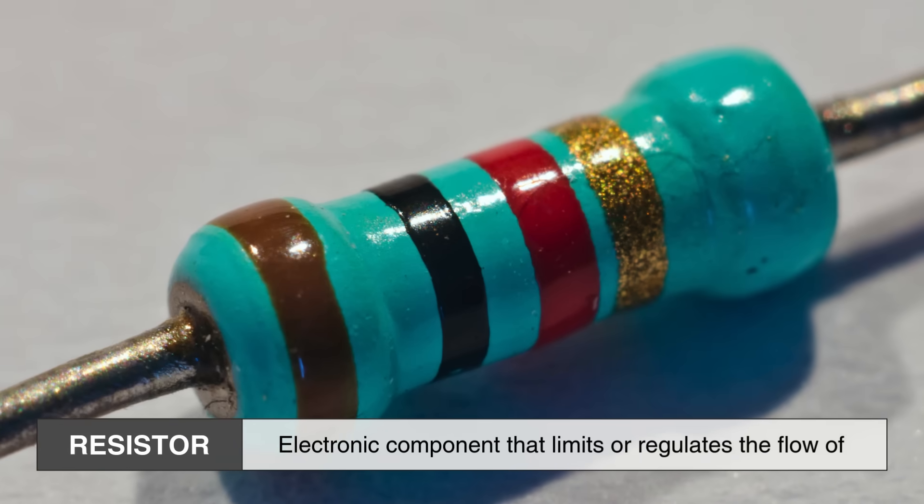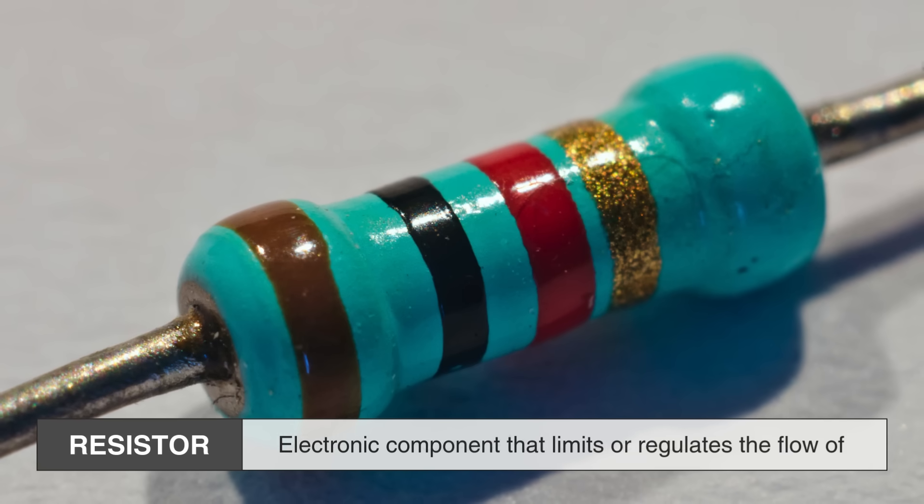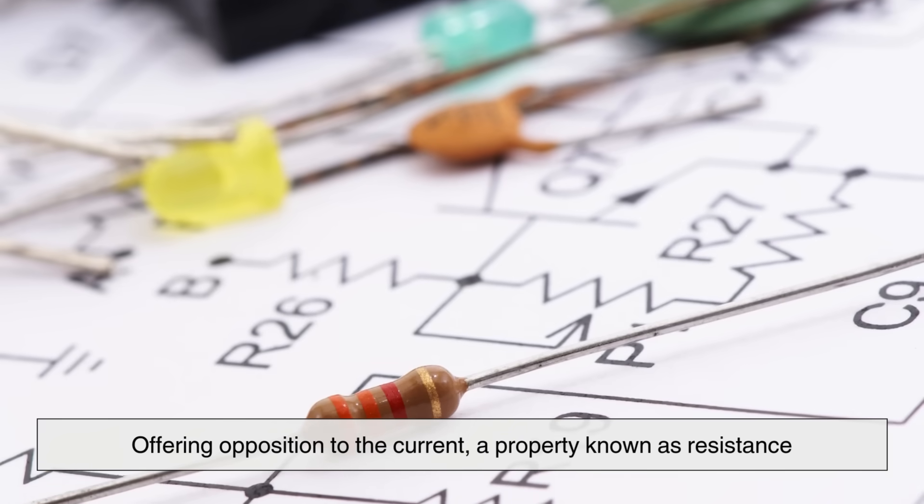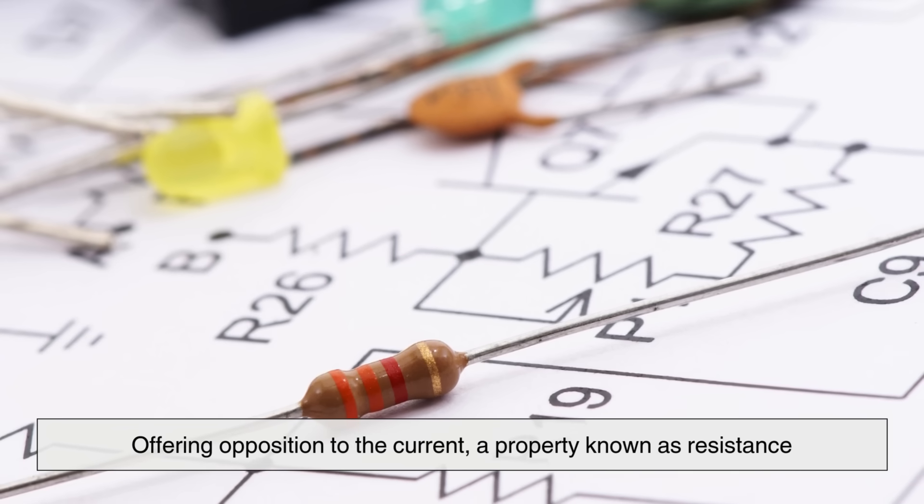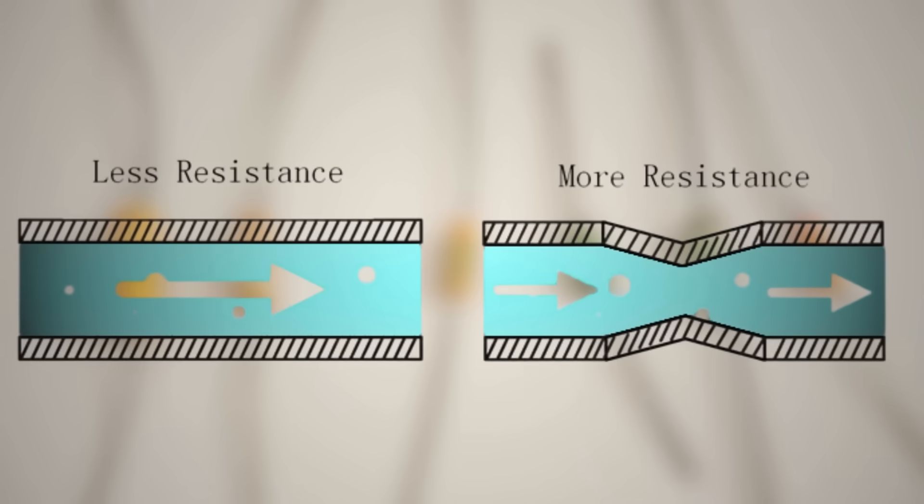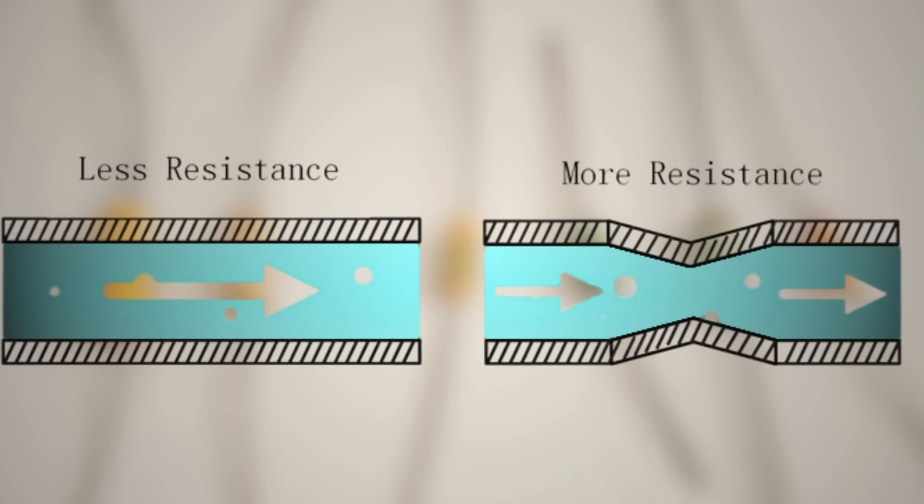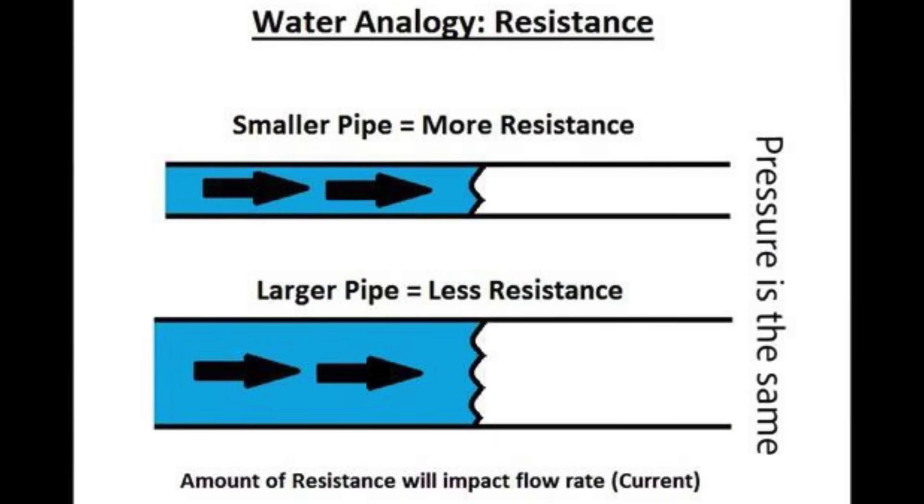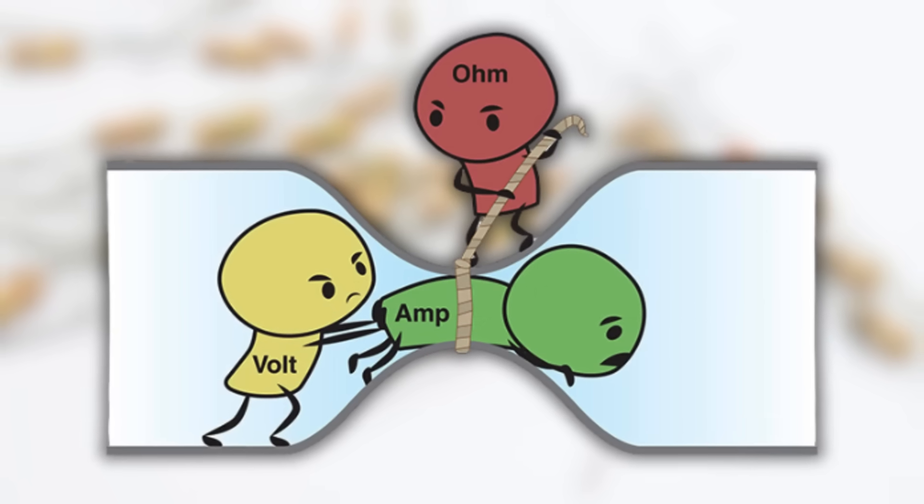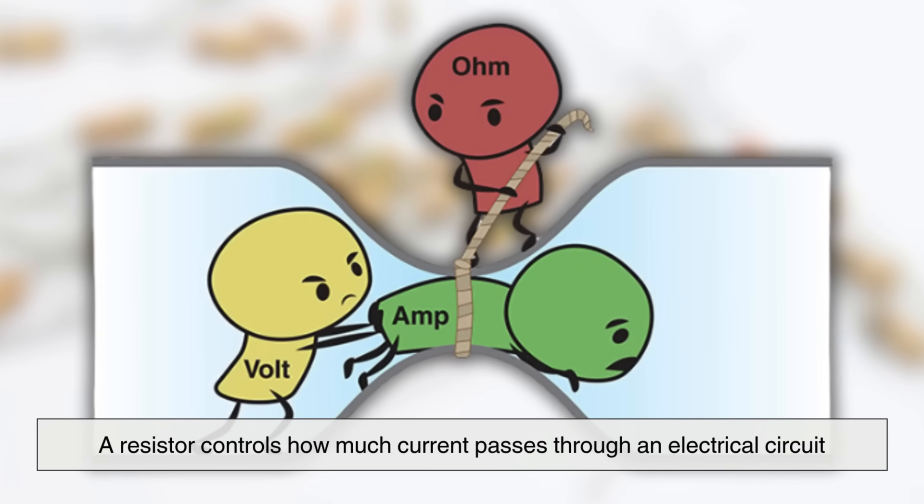A resistor is an electronic component that limits or regulates the flow of electrical current in a circuit. It does this by offering opposition to the current, a property known as resistance, which is measured in ohms. The higher the resistance, the more it restricts the flow of electricity. Think of it like a narrow pipe in a water system. The narrower the pipe, the harder it is for water to flow through it. Similarly, a resistor controls how much current passes through an electrical circuit.